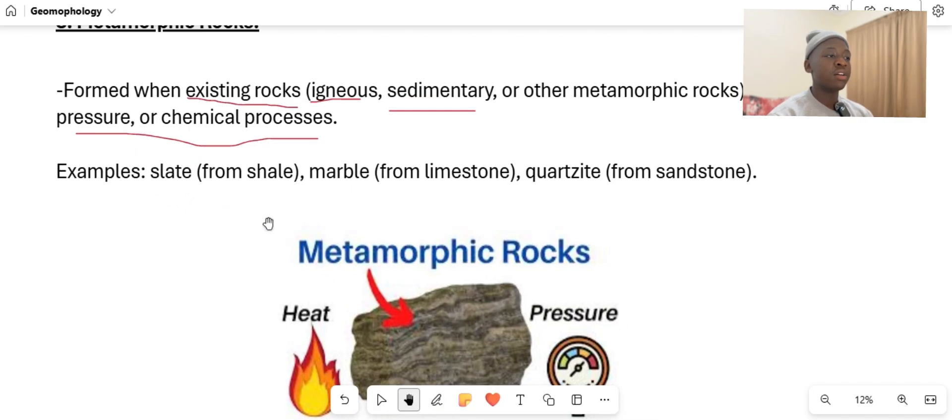For example, it can be slate that comes from the rock shale, it can be marble that comes from the rock limestone, or quartzite that comes from the rock sandstone.